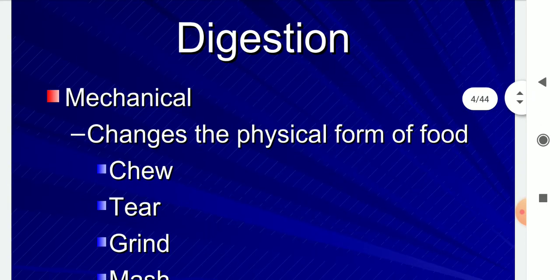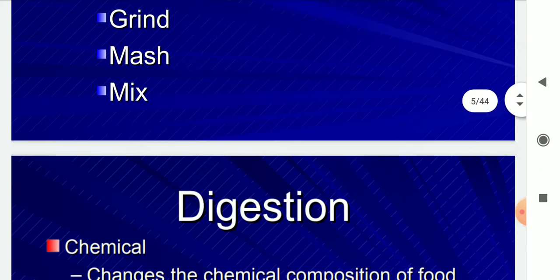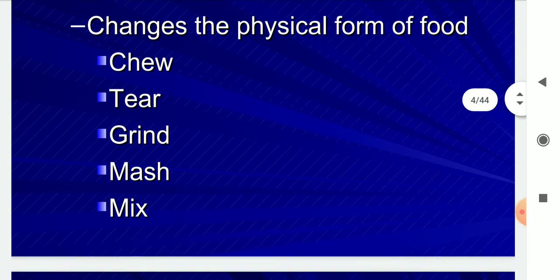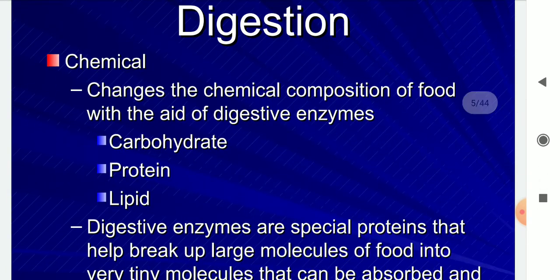There are two forms of digestion — mechanical and chemical. Mechanical digestion changes the physical form of food, like chewing, tearing, grinding, mashing, and mixing. Chemical digestion changes the chemical composition of food with the aid of digestive enzymes — acting on carbohydrates, proteins, and lipids.